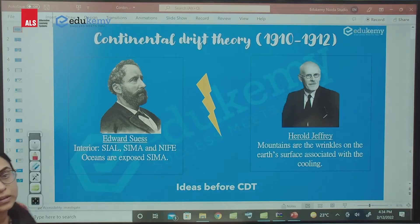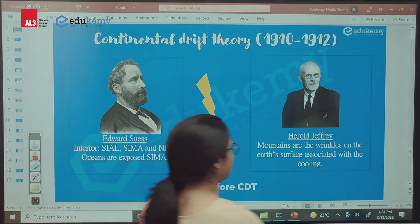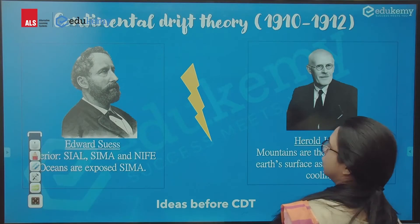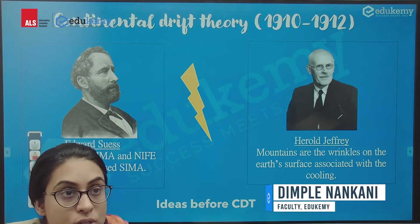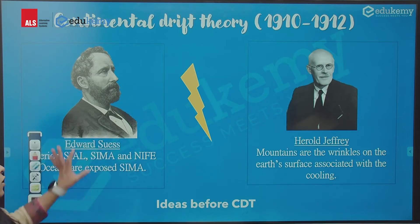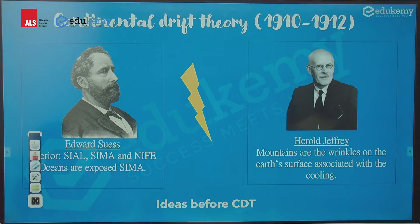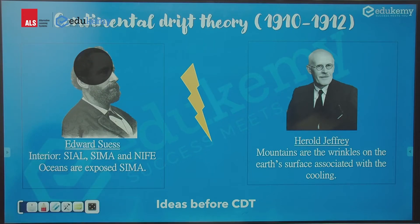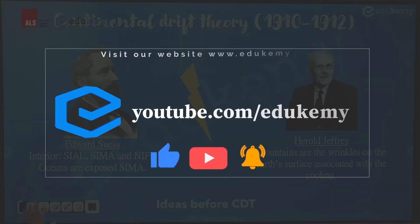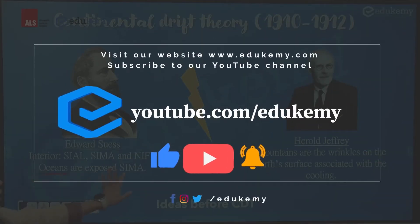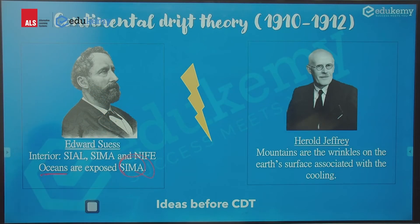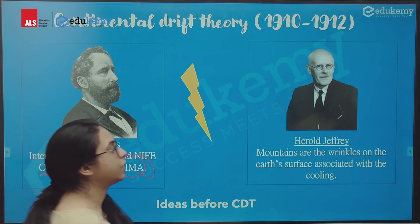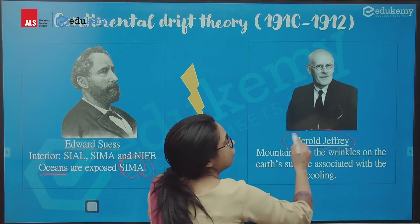Let's understand the Wegener theory. Before Wegener gave his theory, there were two philosophers. One was Edward Suess — he said that sial and sima are the interior of the earth. Oceans are nothing but the exposed sima.